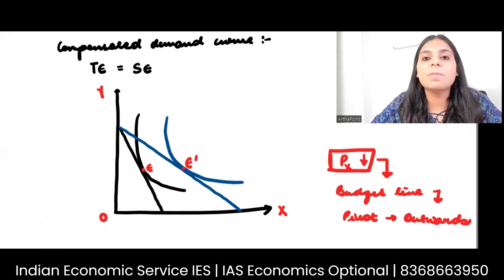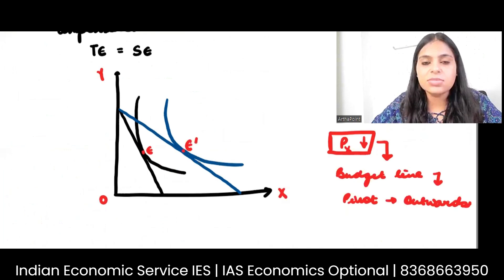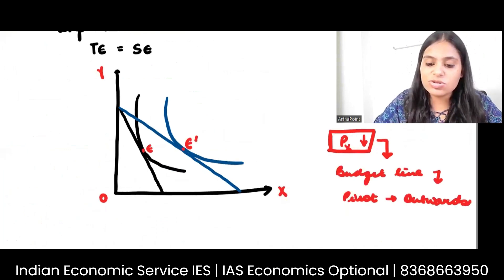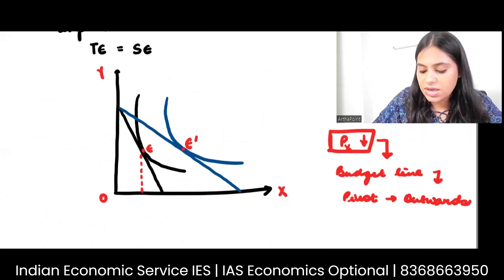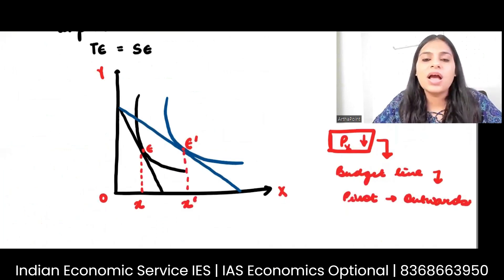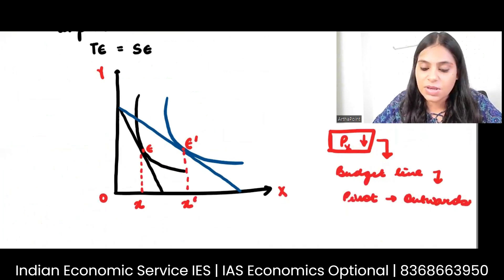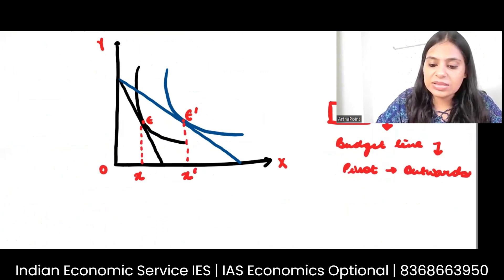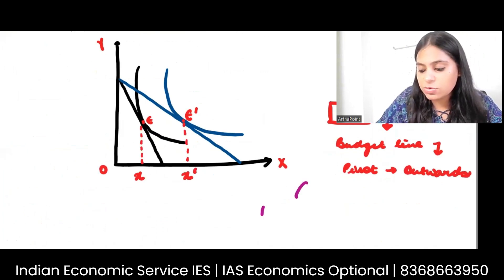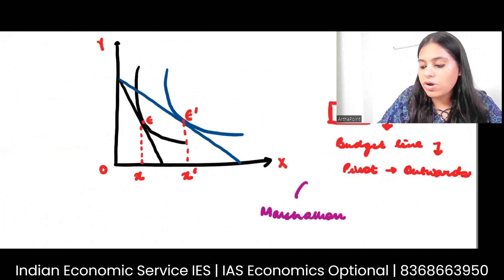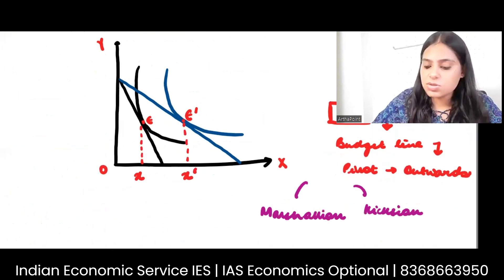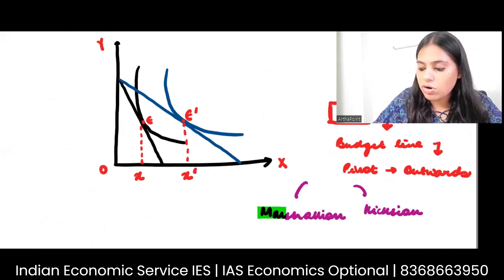The aim is to break this equilibrium into two parts. This total effect goes from X to X dash. I want to break this into substitution and income effects. I can go through either approach — either the Marshallian approach or the Hicksian approach.